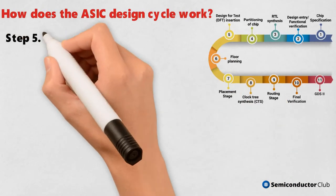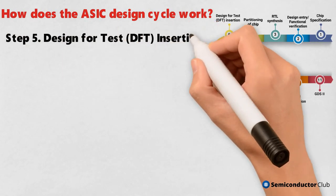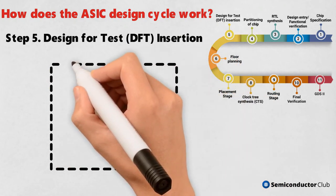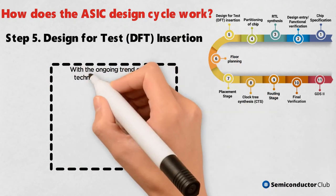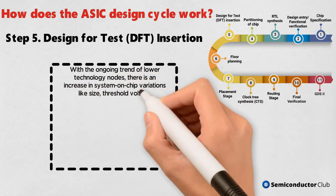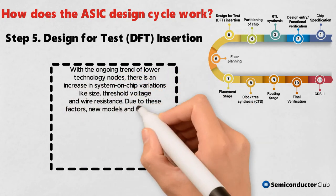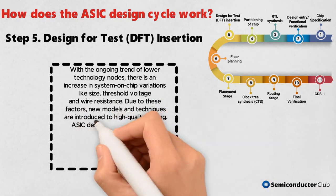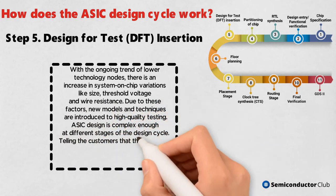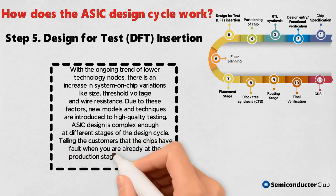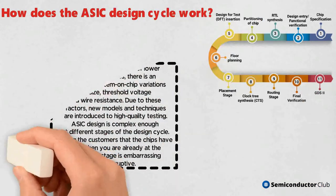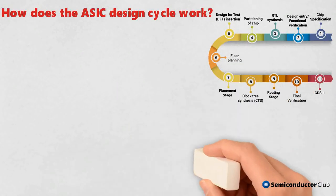Step 5: Design for Test, DFT, insertion. With the ongoing trend of lower technology nodes, there is an increase in system-on-chip variations like size, threshold voltage, and wire resistance. Due to these factors, new models and techniques are introduced for high-quality testing. ASIC design is complex enough at different stages of the design cycle — telling customers that chips have faults when already at the production stage is embarrassing and disruptive.